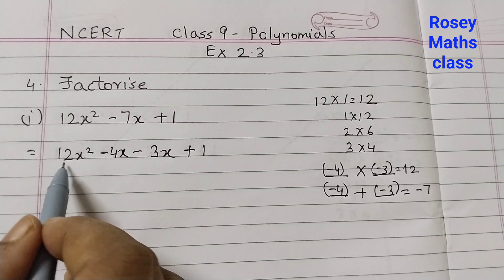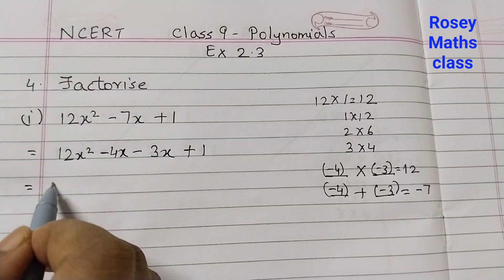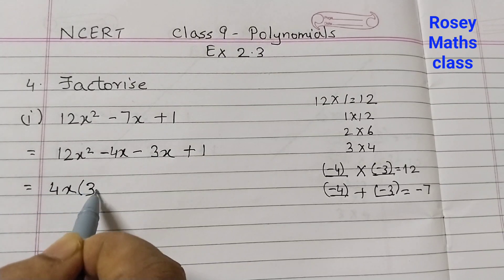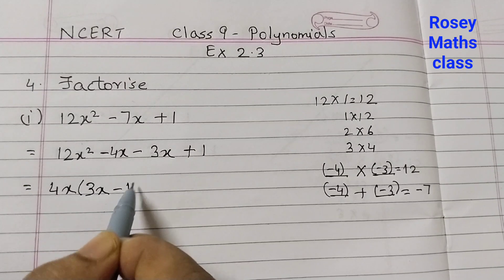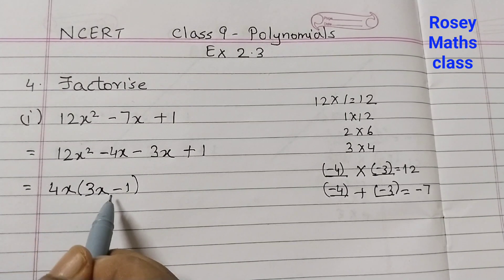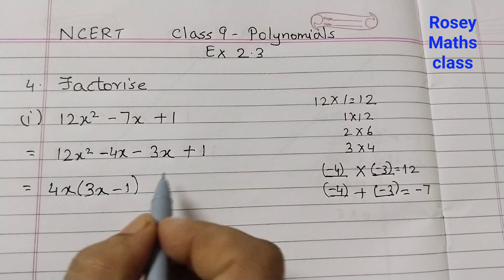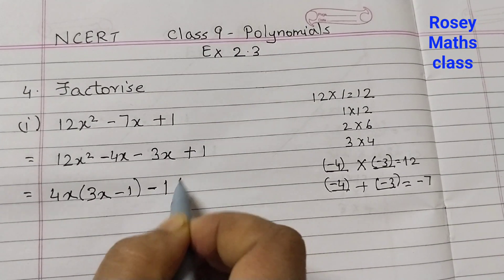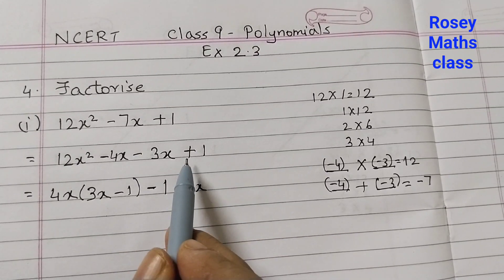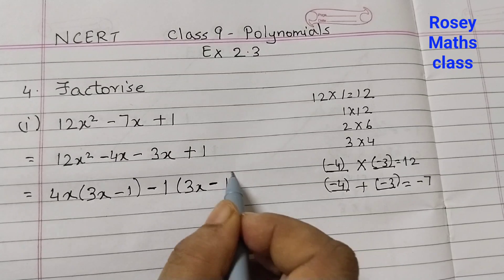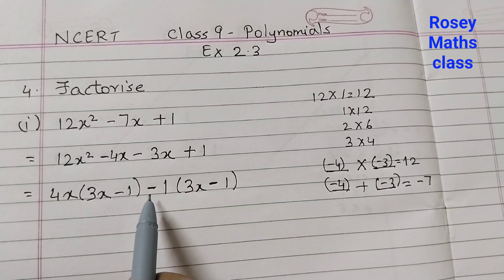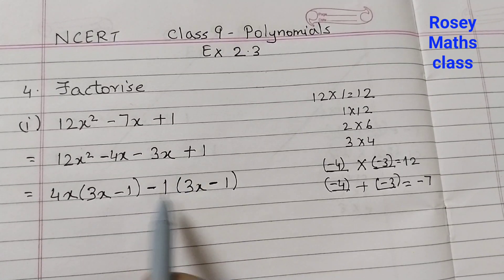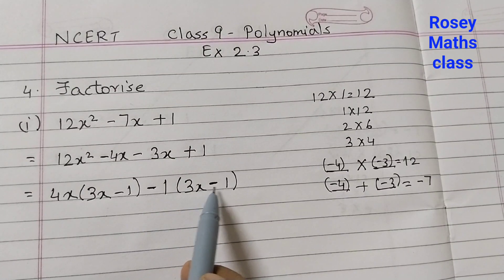We will find the common factors of the first two terms. 12 and 4 — 4 is common. So 4x, and 4 into 3 is 12, so 3x. That gives us 4x(3x minus 1). Now for the last two terms, minus 3x plus 1 — the only common factor is 1. So we take minus 1 out. Remember: when we take minus as a common factor, minus 1 into 3x is minus 3x, and minus into minus becomes plus. So that's minus 1(3x minus 1).